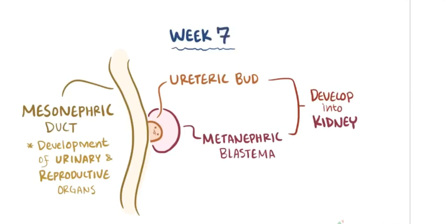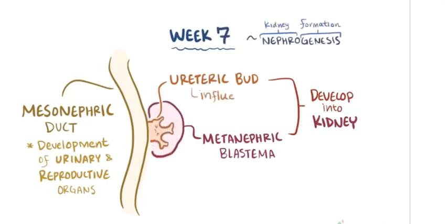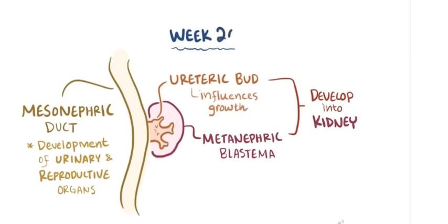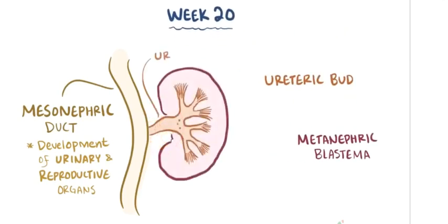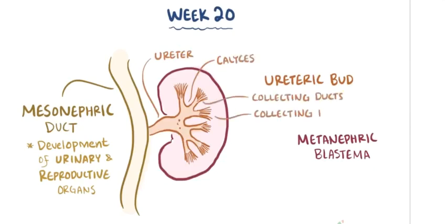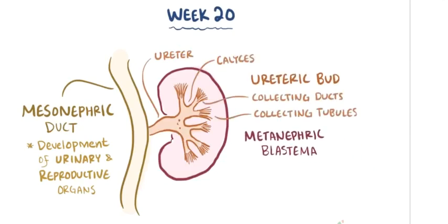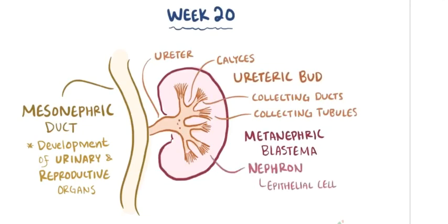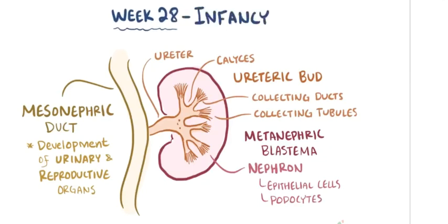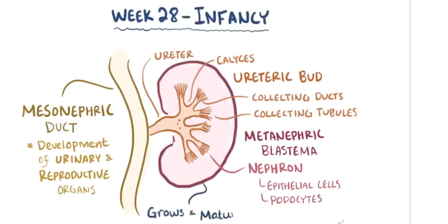At about the seventh week, nephrogenesis, or formation of the kidneys, starts under the influence of the ureteric bud. By about 20 weeks, the ureteric bud has formed the ureters, the renal calyces, collecting ducts, and collecting tubules, while the metanephric blastema develops into the nephron itself, which includes the epithelial cells and the podocytes of the Bowman's capsule. In the third trimester and throughout infancy, the kidneys continue to grow and mature.